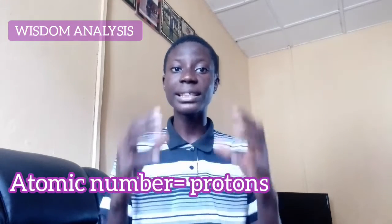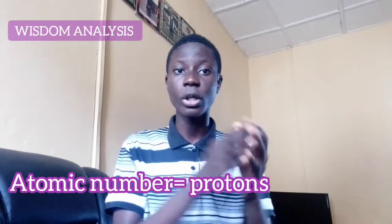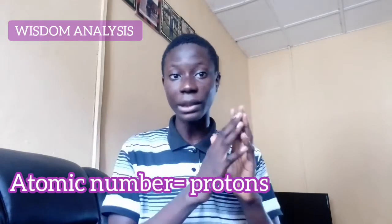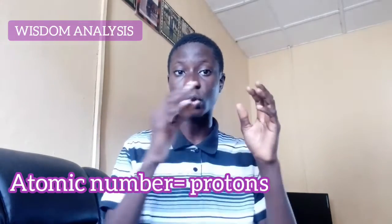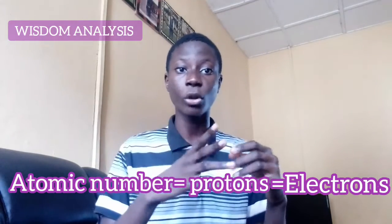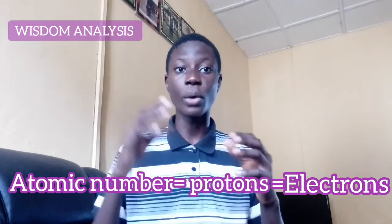The atomic number — let's say for an element such as hydrogen, its atomic number is one. The atomic number is the same as the number of protons. But when an atom has not combined with another atom, the number of electrons is also the same as the protons. So the electrons, the protons, and the atomic number are all the same.